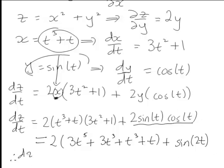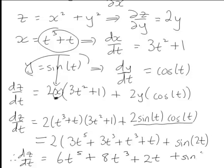Finally, expanding through those first brackets by 2, we find that as a function of t, dz/dt equals 6t⁵ + 8t³ + 2t + sin(2t). So that's an example of using the chain rule in differentiating this function of two variables with respect to t.